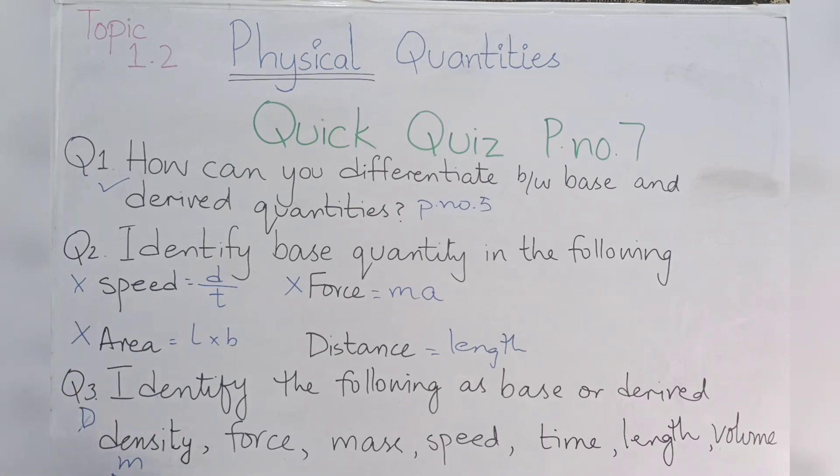Second one is force. Force is ma. Again, this is a derived quantity. Mass is a base quantity, speed is a derived quantity, time is also a base quantity, length is also a base quantity, and volume is also a base quantity. I hope the three questions of this quick quiz are clear to you. All these three questions are very important according to the paper point of view.